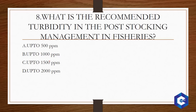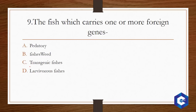What is the recommended turbidity in post-stocking management in fisheries? In post-stocking management you have to remember water pH, temperature, turbidity, as well as harvesting period and timings. The answer to this question will be up to 2000 ppm — this is the recommended turbidity level that is acceptable in post-stocking management in fisheries.